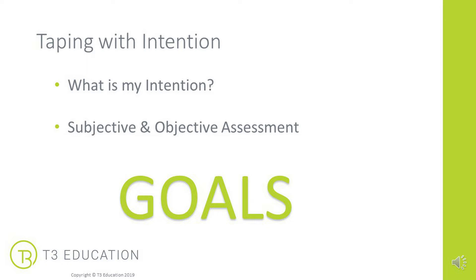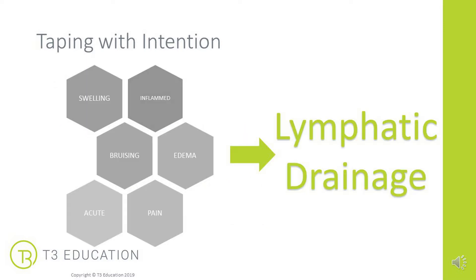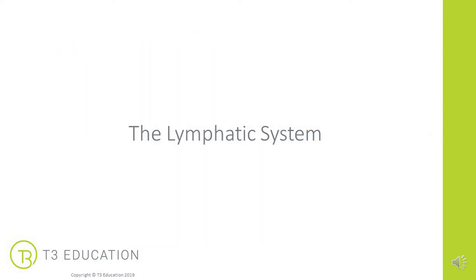What comes to mind when you're doing your assessments are things like swelling, pain, acute inflammation, bruising, and edema. These are all the key words or key observations that would lead us to think that perhaps a lymphatic drainage type taping is what is going to be needed.